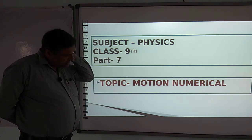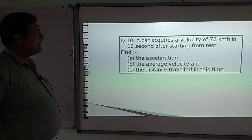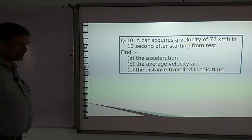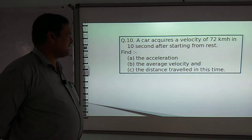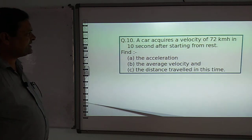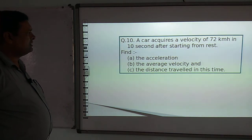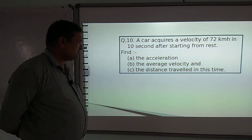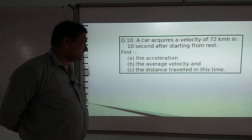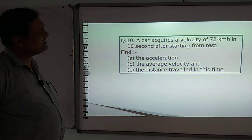Today I will discuss motion numerical questions. The first question: a car acquires a velocity of 72 km per hour in 10 seconds after starting from rest. Find the acceleration, the average velocity, and the distance travelled in this time.